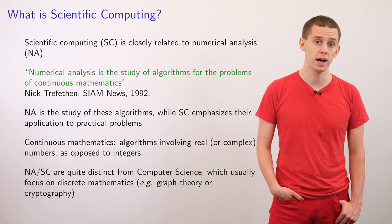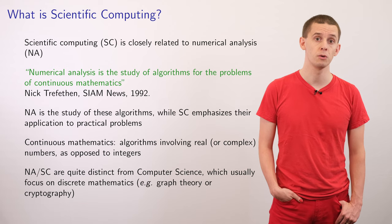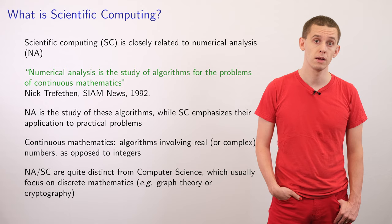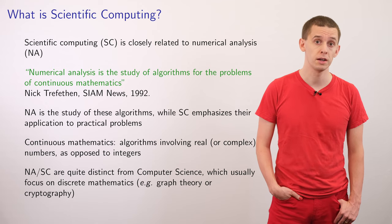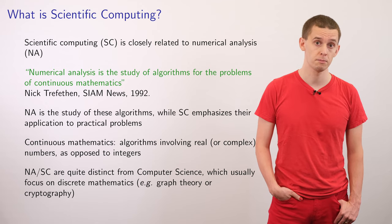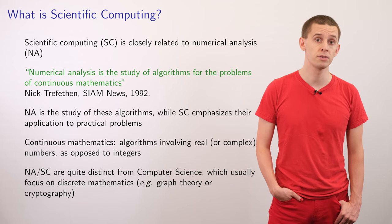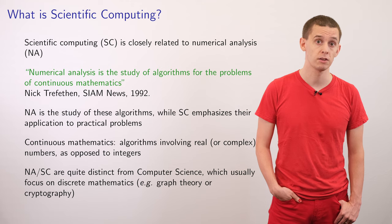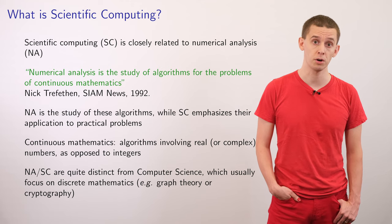We're really interested in algorithms for use with real numbers, or perhaps complex numbers, as opposed to integers. And this really makes a key distinction between the field and many areas of computer science. In computer science, there's more of an emphasis on the algorithms for discrete mathematics, such as in graph theory or cryptography.